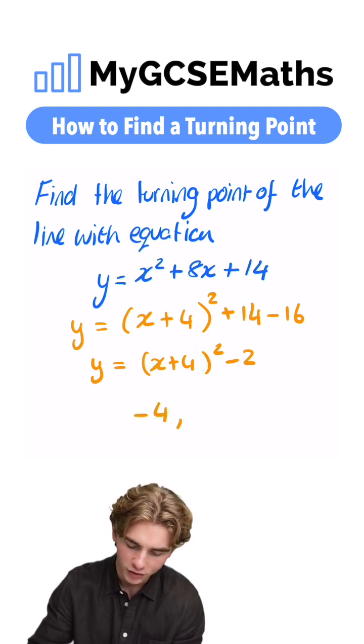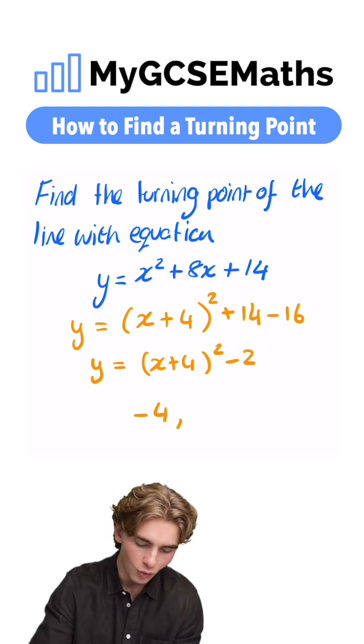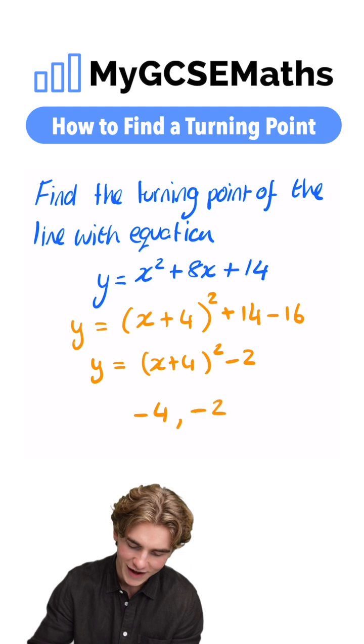And to find our y-coordinate, we just take this number on the end, and we keep the sign the same because this is negative 2. The y-coordinate of our turning point is negative 2.